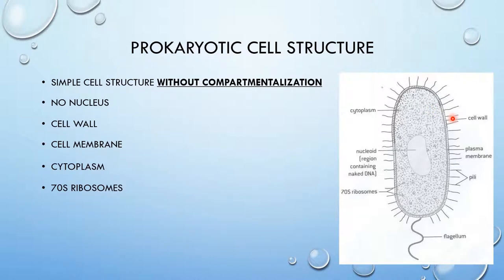Prokaryotic cells have 70S ribosomes. Ribosomes produce proteins. The 70S refers to the size of the ribosomes. When we go over eukaryotic cells, you guys are going to realize that eukaryotic cells have 80S ribosomes. I'll explain the difference later.